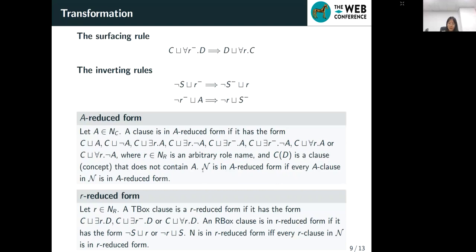And next, we introduce two specialized normal forms based on clausal normal forms, namely A-reduced forms and R-reduced forms. These forms are crucial because they are used in the main calculus of our forgetting method for concept name and role name elimination. And these two rules can be used to transform the clausal normal form set into the A-reduced form and R-reduced form.